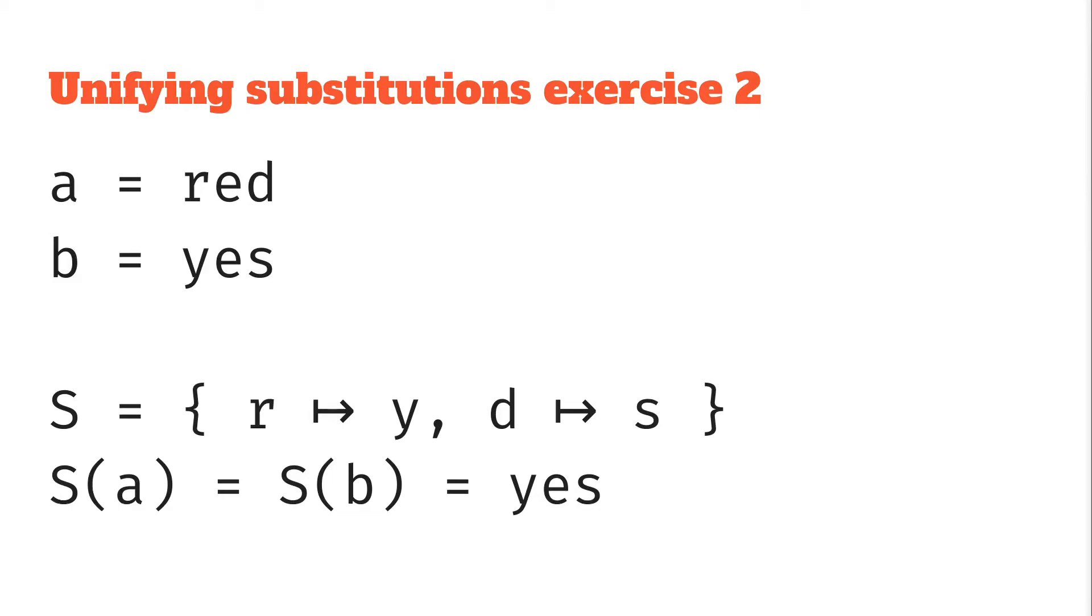We can do the similar thing the other way around, so actually we could do Y to R and S to D, which would map both of them to red, we could do a mix of them, so we could do Y to R, D to S and we get res, lots of different options here really, and the point this shows is that a unifying substitution isn't necessarily unique.